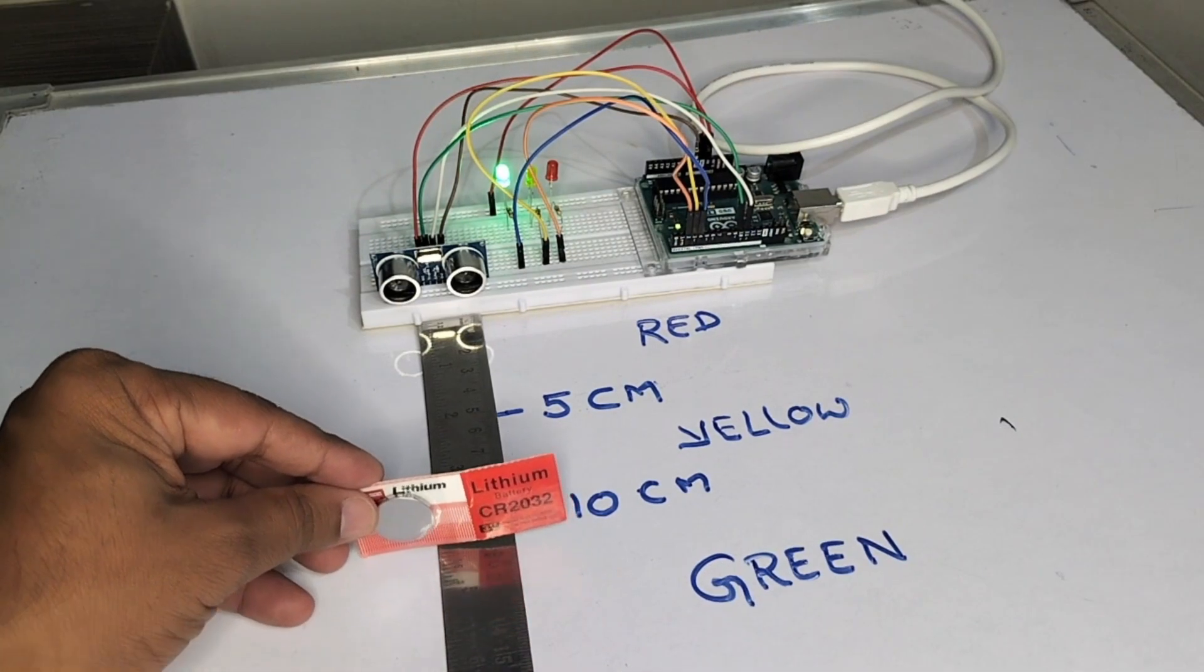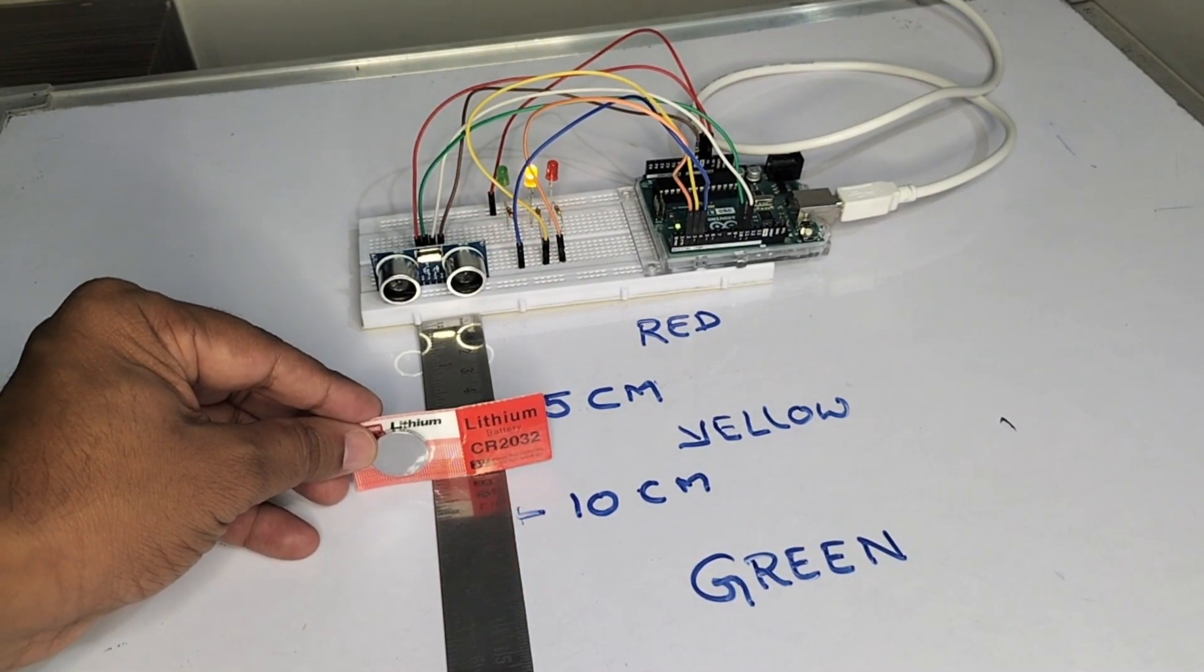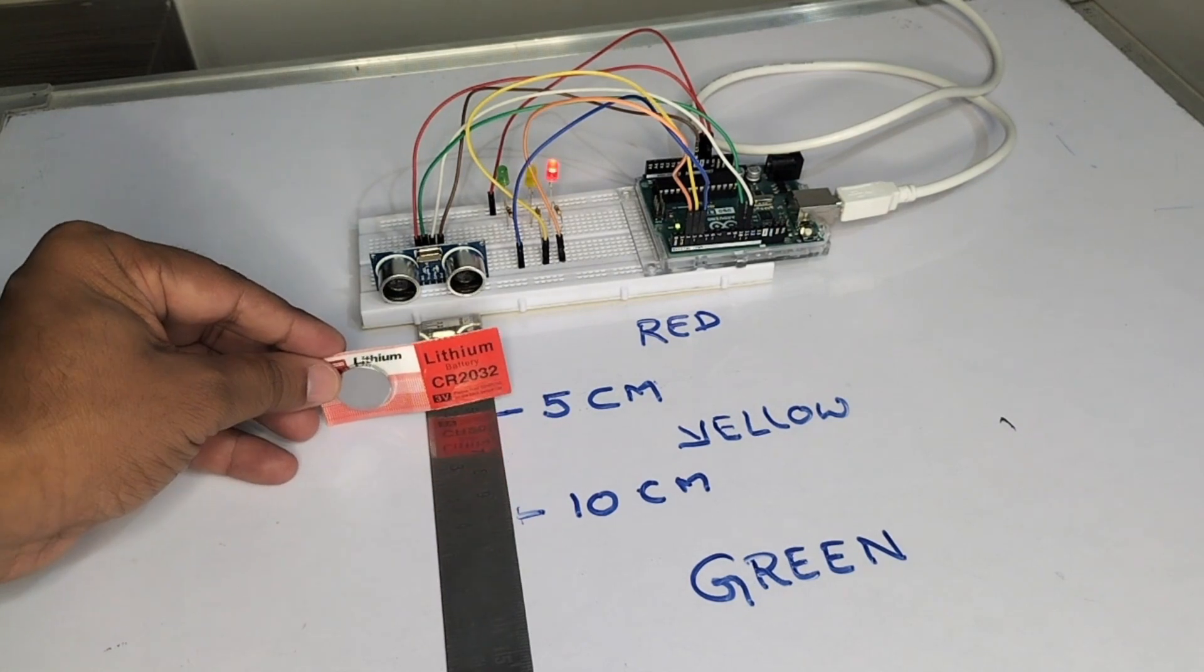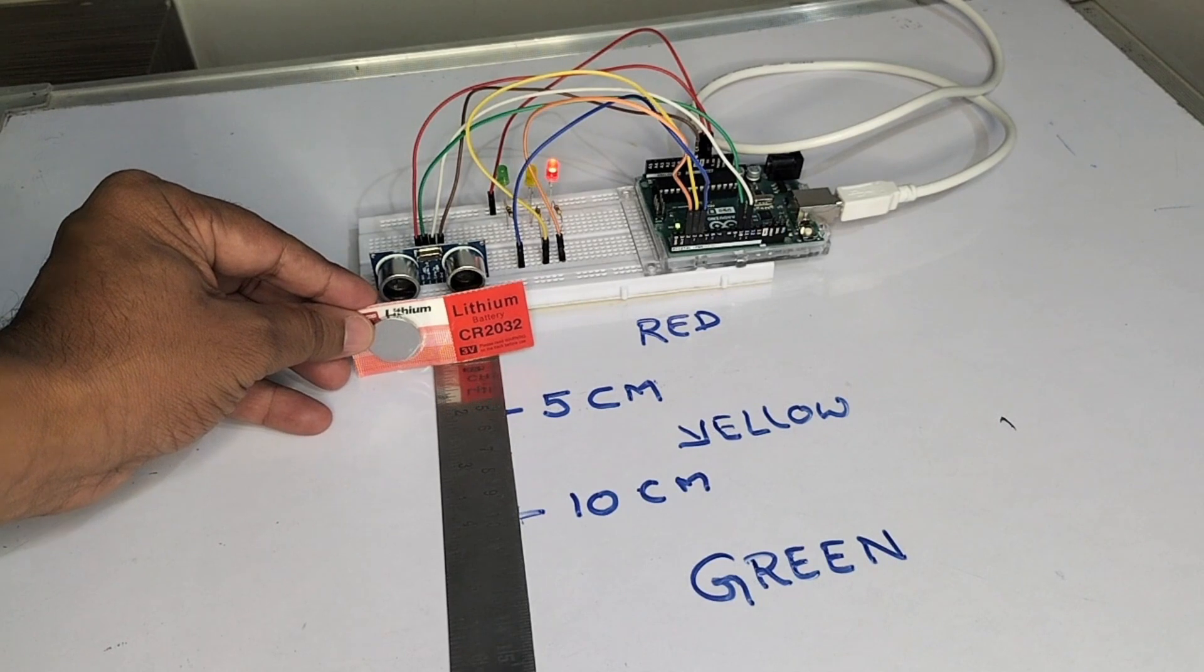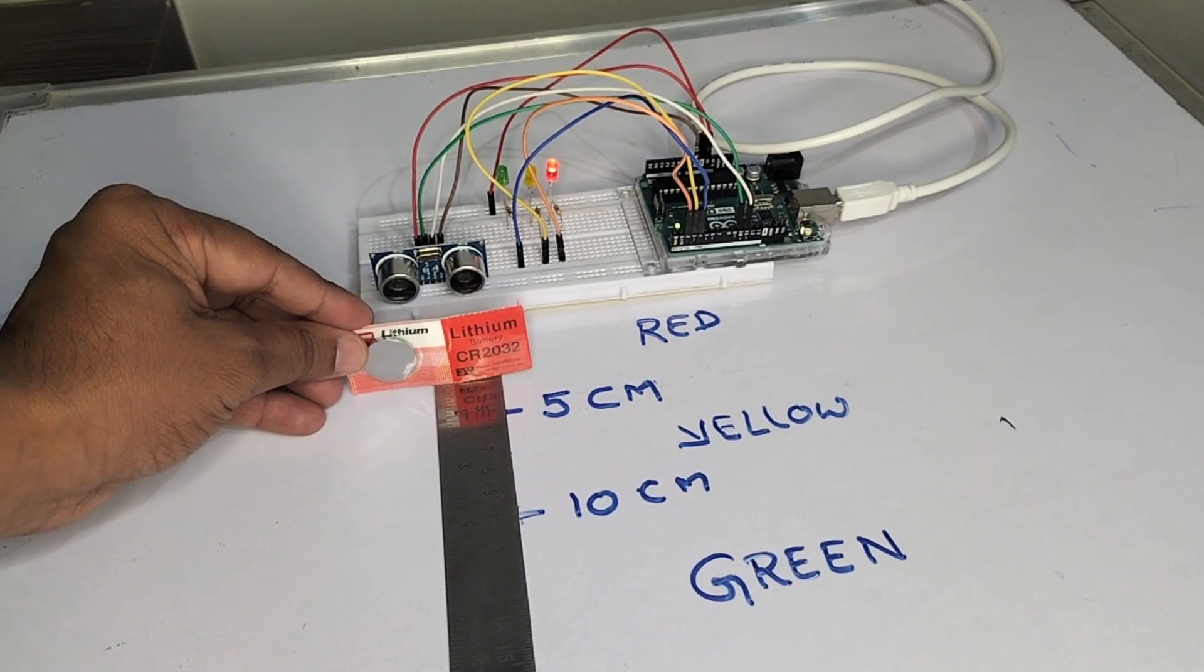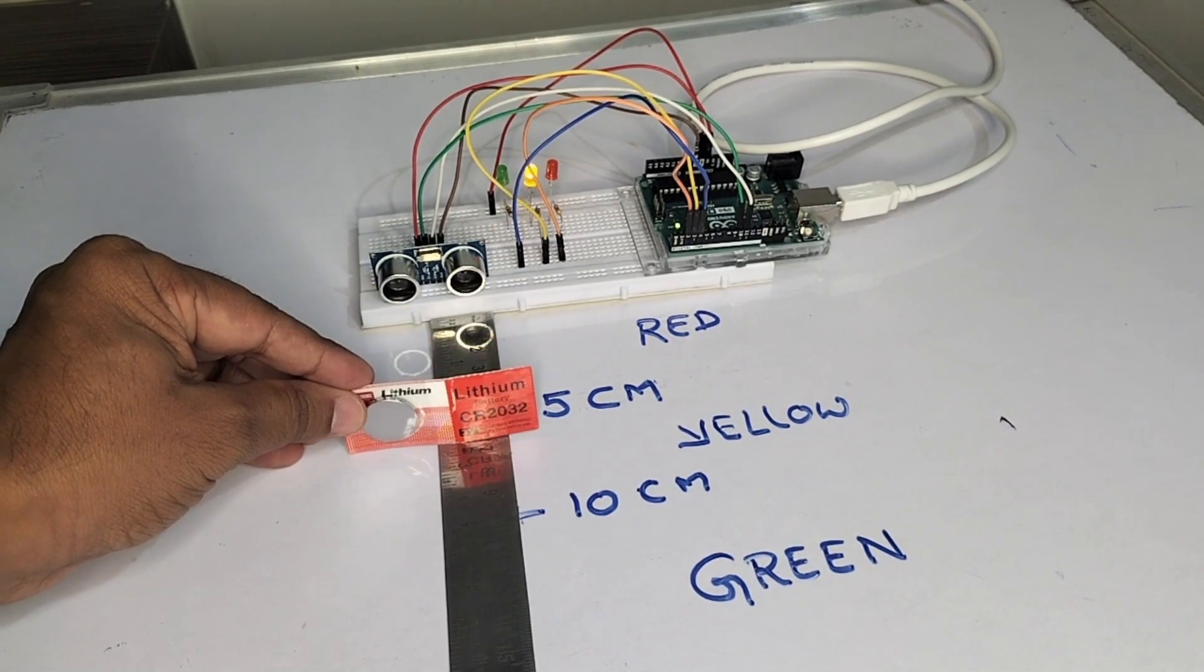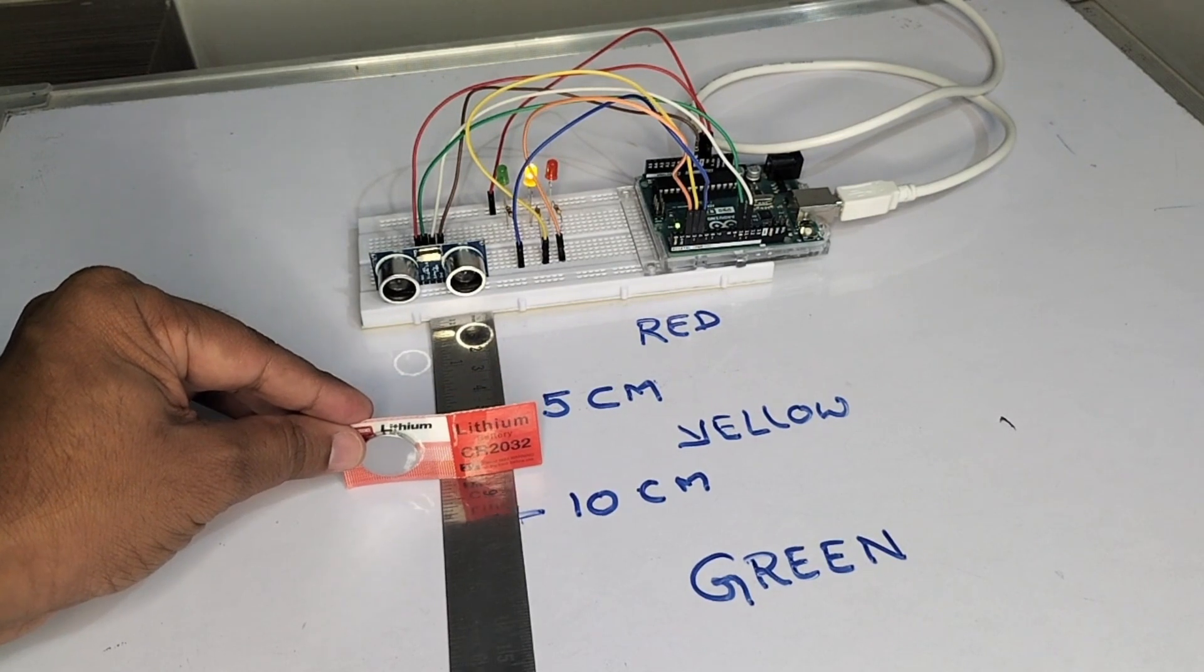Now let us see the demo, friends. As you're moving closer, the LED is blinking. It has been shifted. And now it is less than five centimeters, the red LED is blinking. Now if you try within five centimeters, the red LED. And if you move forward above five centimeters, the yellow LED.